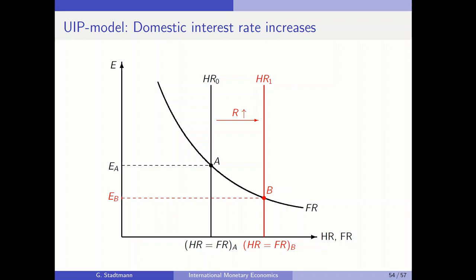For a dynamic story: in the first step, the domestic interest rate increases, making investment in the domestic economy more attractive. Investors demand domestic currency and supply foreign currency, so the domestic currency strengthens and the foreign currency weakens. This story explains how we move from point A to point B, and why the increase in the domestic interest rate leads to a decrease in the exchange rate.